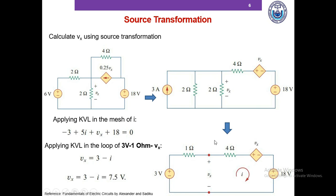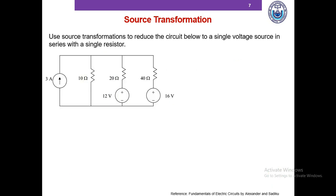In this manner, source transformation easily helps us discover resistors and voltage sources in series, or resistors and current sources in parallel, so that we can combine them, reduce the size of the circuit, and get a more manageable circuit. I'd request you to pause this video and try to solve the next problem to consolidate what we've learned and identify any knowledge gaps.